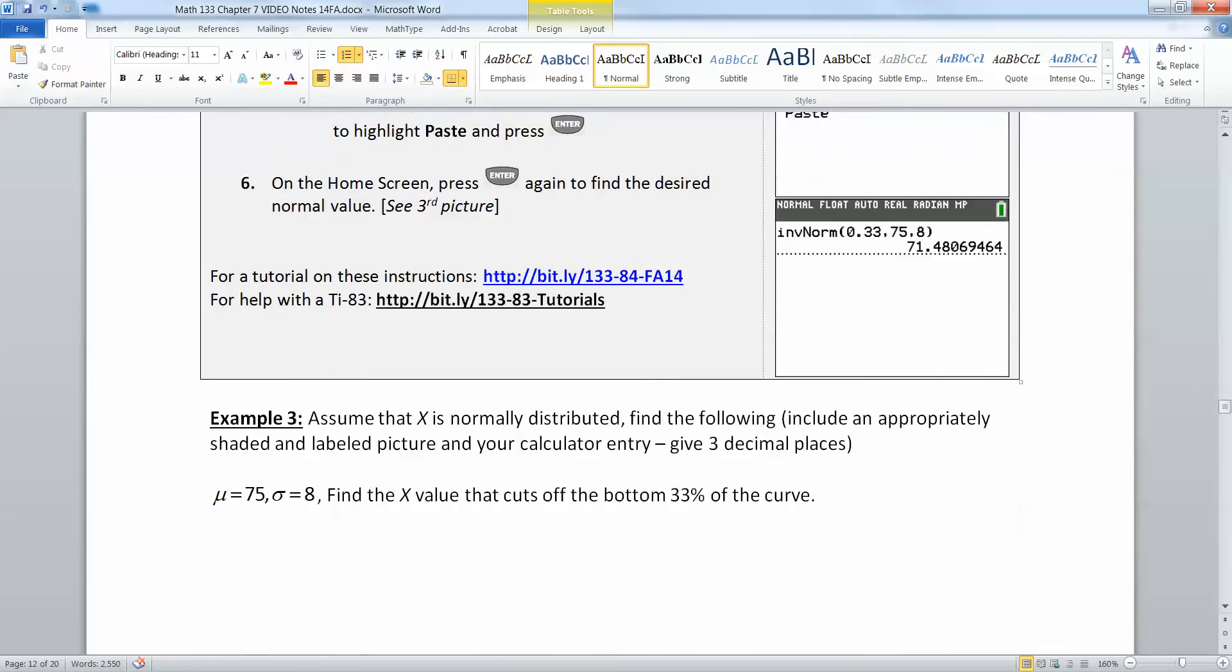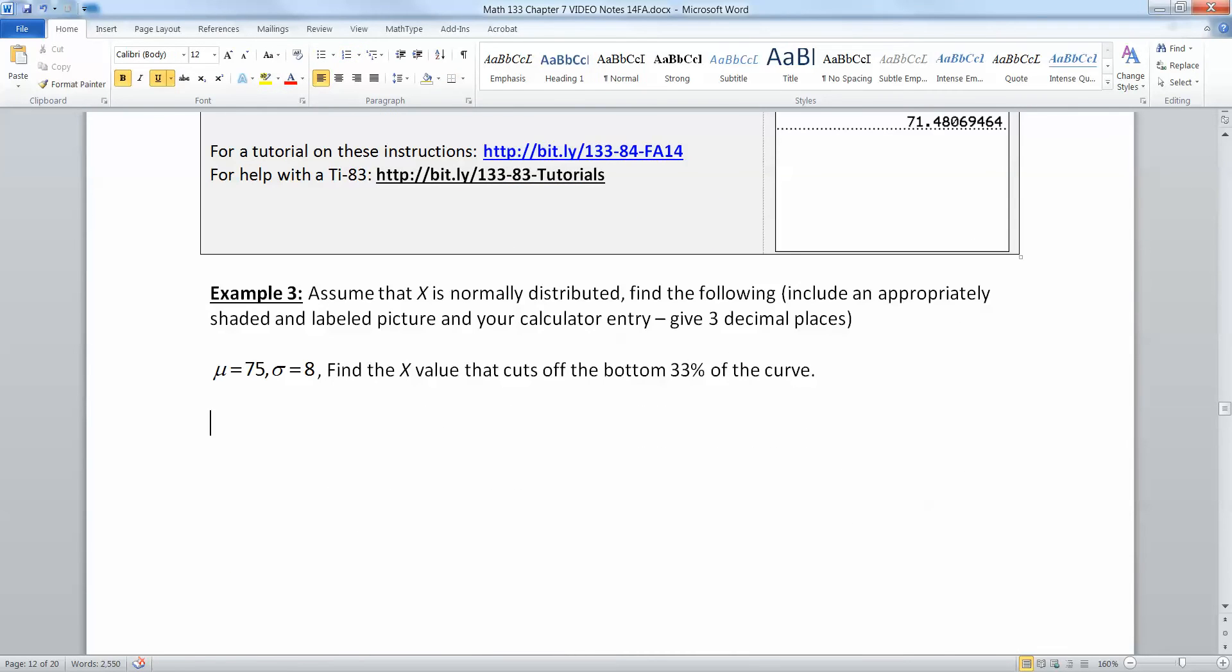So let me draw a picture for you right here. So we have assumed that x is normally distributed, x being your random variable. Find the following. Include an appropriately shaded and labeled picture and your calculator entry and give three decimal places. So the mean is 75. The standard deviation is 8. Now I find the x value that cuts off the bottom 33% of the curve.